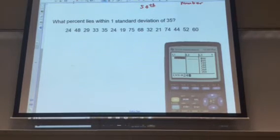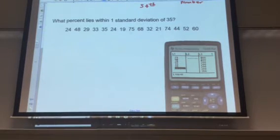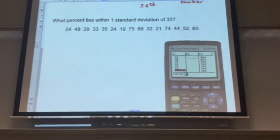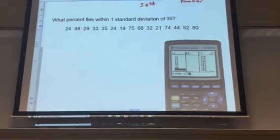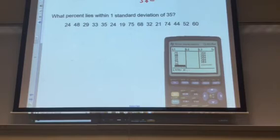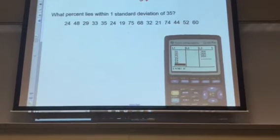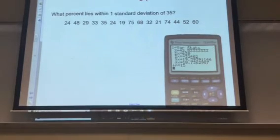Okay, so 24, 48, 29, 33, 35, 24, 19, 75, 68, 52, 21, 74, 44, 52, 60. So I have 15 pieces of information in there. Now I can do my stats and I can do my one variable statistics on the list.